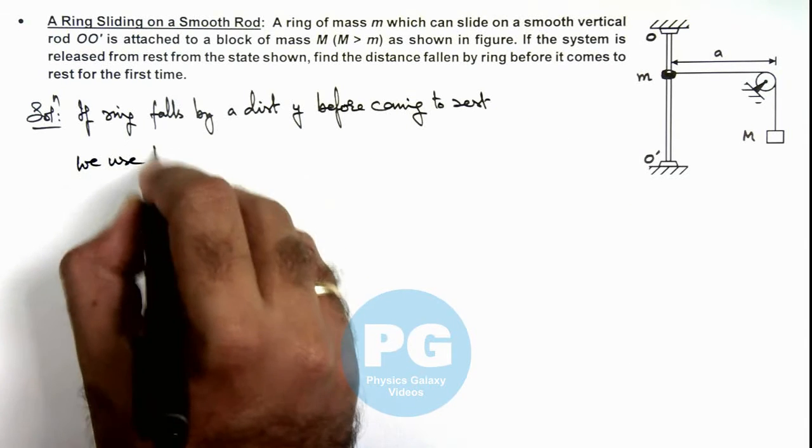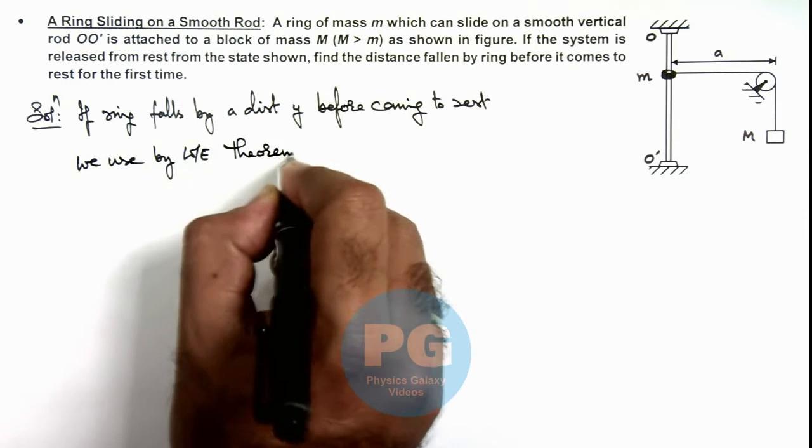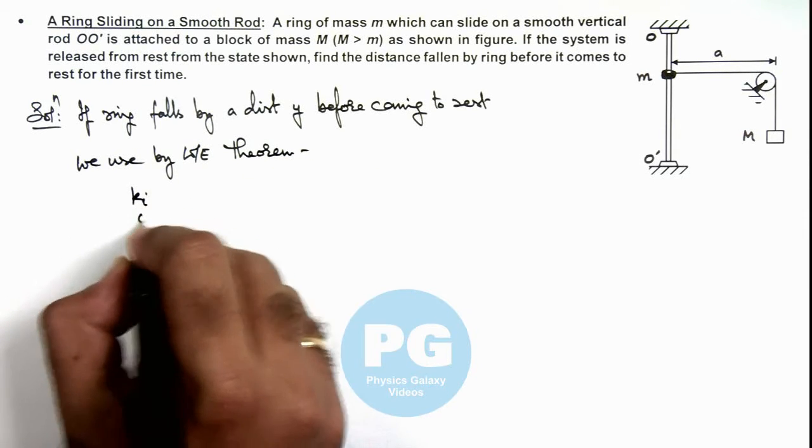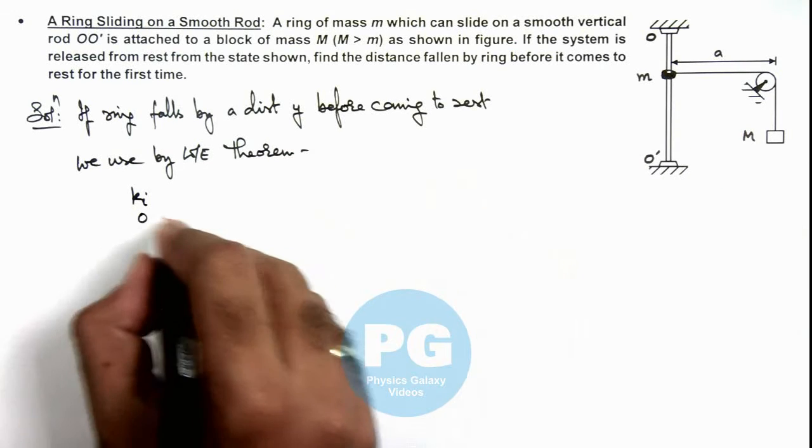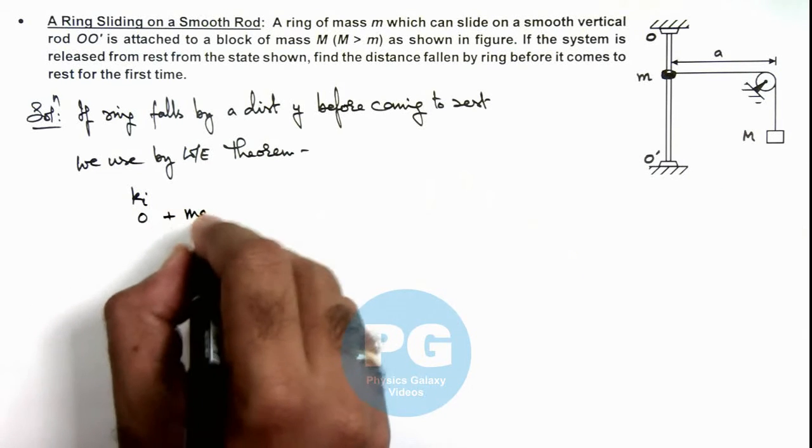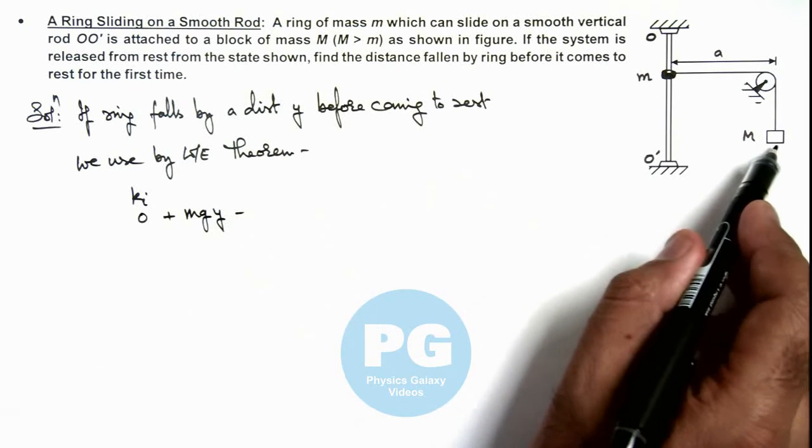We use work energy theorem. Initial kinetic energy would be zero. If it is fallen by distance y, work done by gravity on it is mgy minus work done by gravity on the block as it will move up.